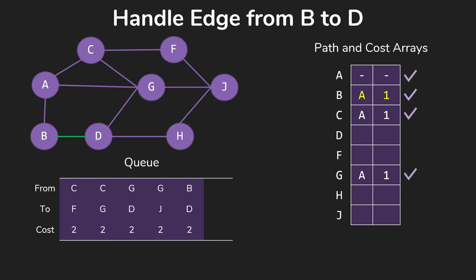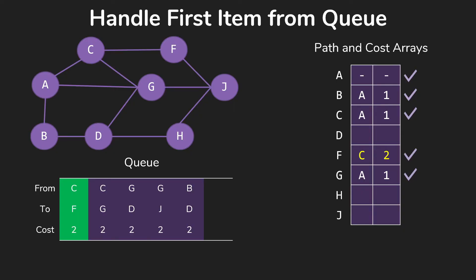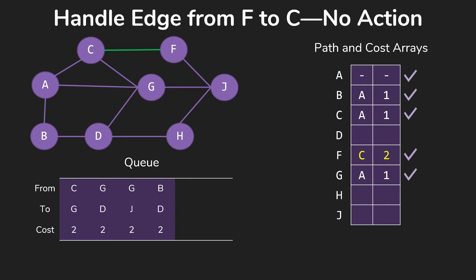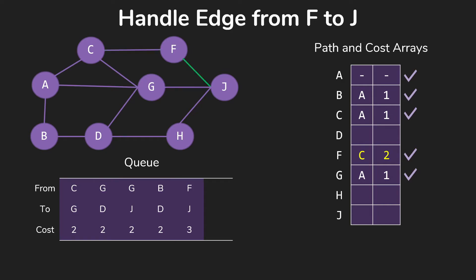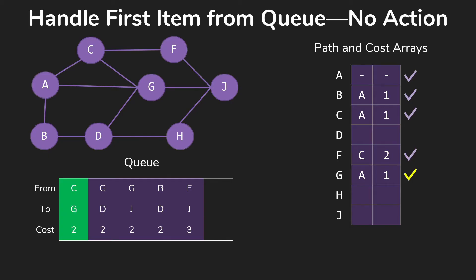We check our loop conditions and now handle C to F: we add F and update the information in the arrays. For F to C we don't do anything. For F to J we add that information. That finishes all edges out of F. We check conditions, still not done. We pull C to G from the queue — we already have G, so we simply don't do anything and throw that one away.